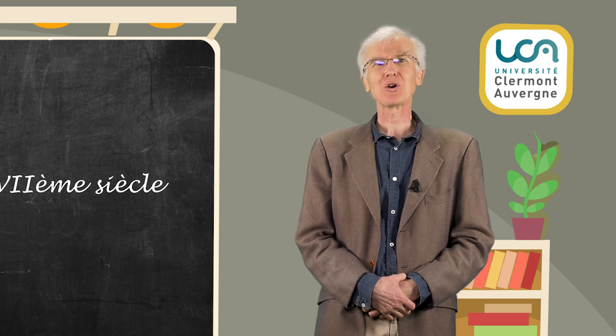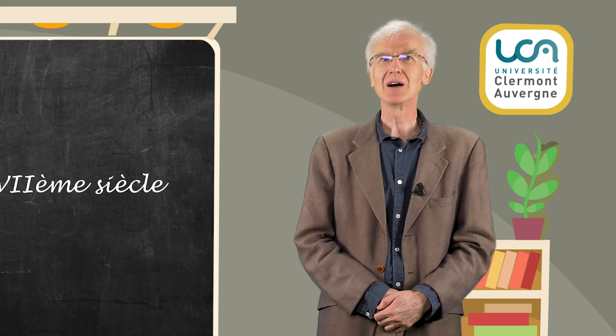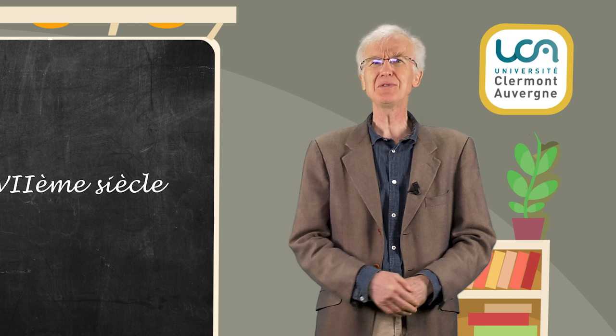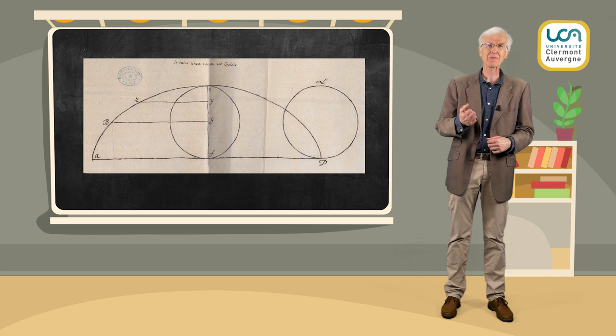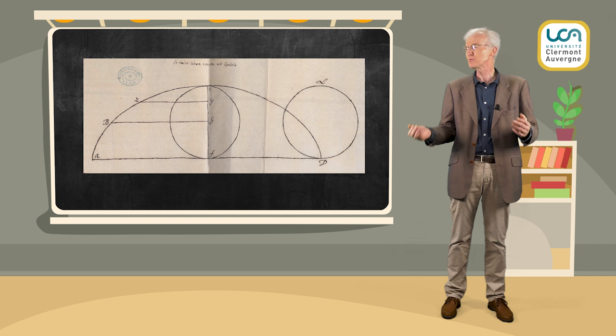La cycloïde a aussi l'étrange privilège d'avoir été une pomme de discorde durable entre mathématiciens. Cette hélène des mathématiques, comme elle fut nommée plus tard, engendra d'innombrables disputes, criailleries, chamailleries, autour de diverses querelles de priorités ou contestations de preuves. Descartes s'est disputé avec Roberval, qui s'est disputé avec Torricelli, Pascal s'en est pris à Wallis, qui appela Huygens à la rescousse, etc.